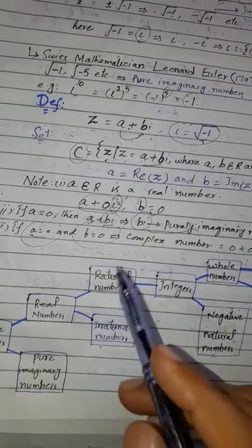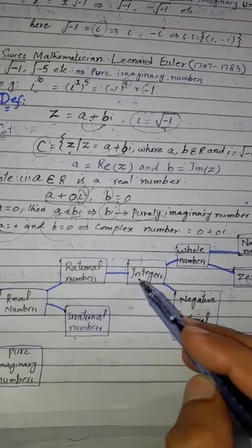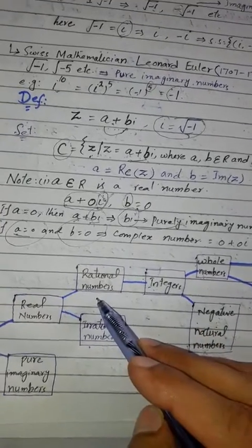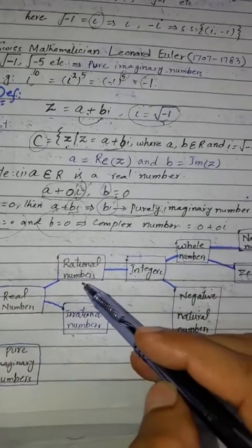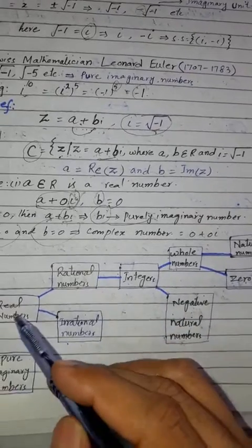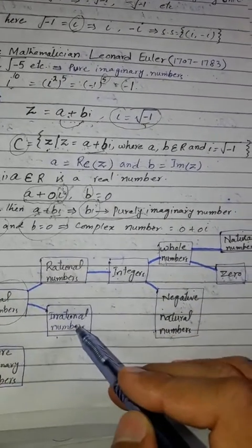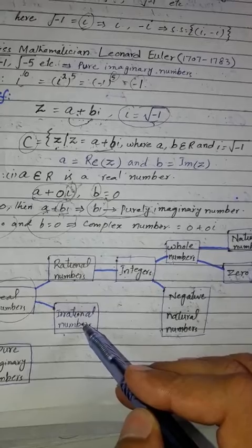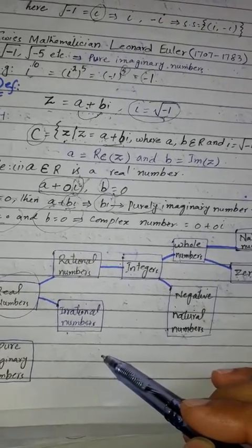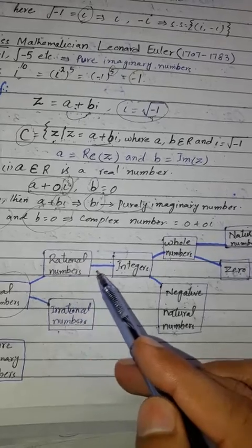Integers are contained in rational numbers. The union of rational numbers and irrational numbers gives us the real numbers. Rational numbers are a subset of real numbers.